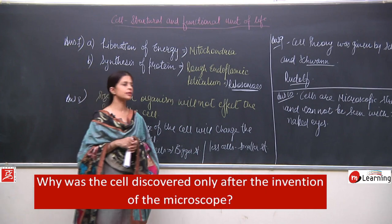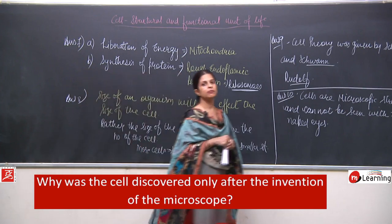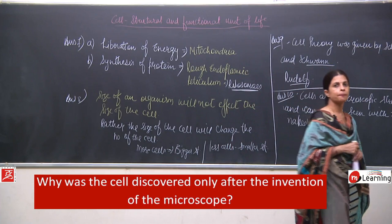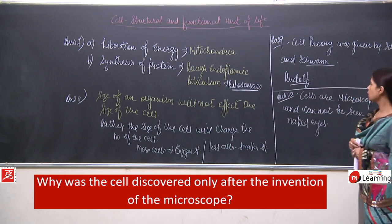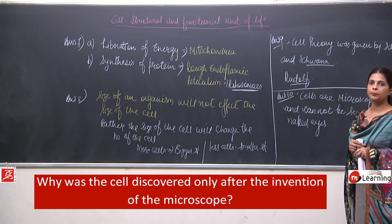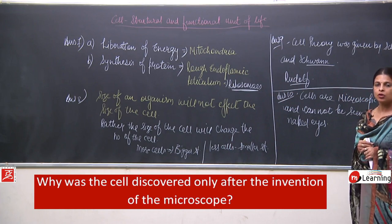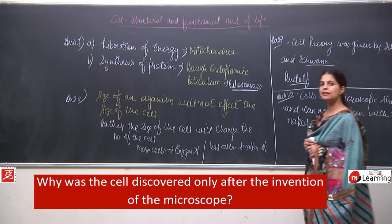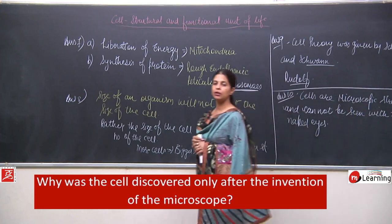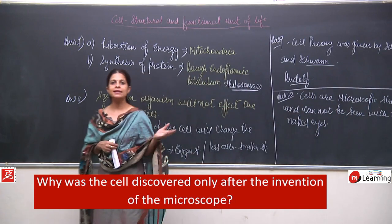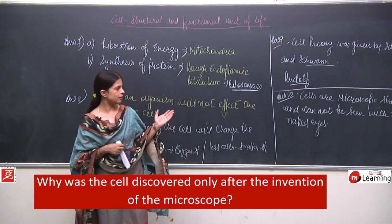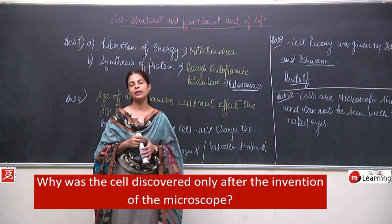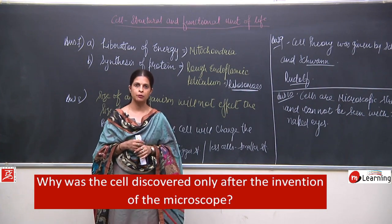Afterwards, the living cell was seen. So Robert Hooke saw the cell for the first time. The key point of this question was: why was the cell discovered only after the discovery of the microscope? Because cells are microscopic structures that cannot be seen by the naked eye.